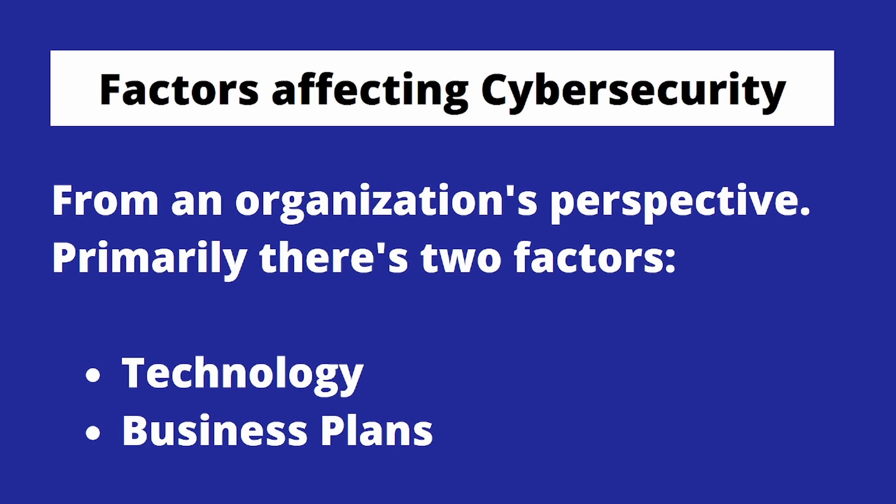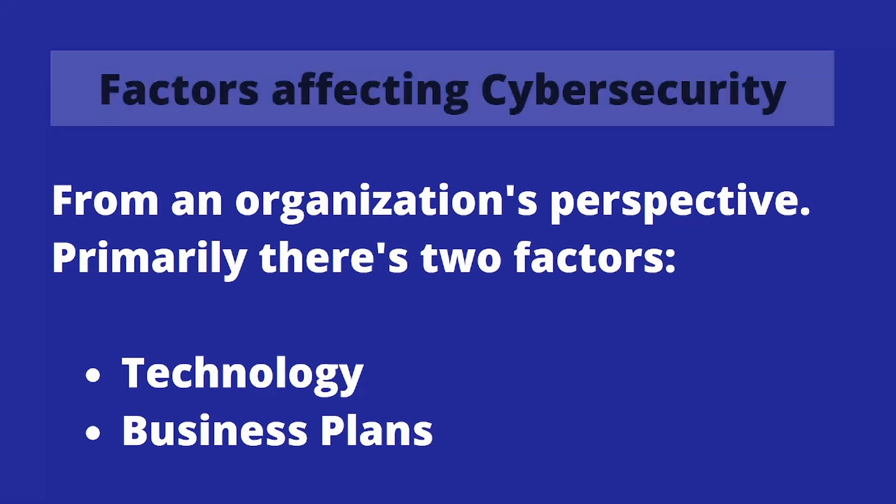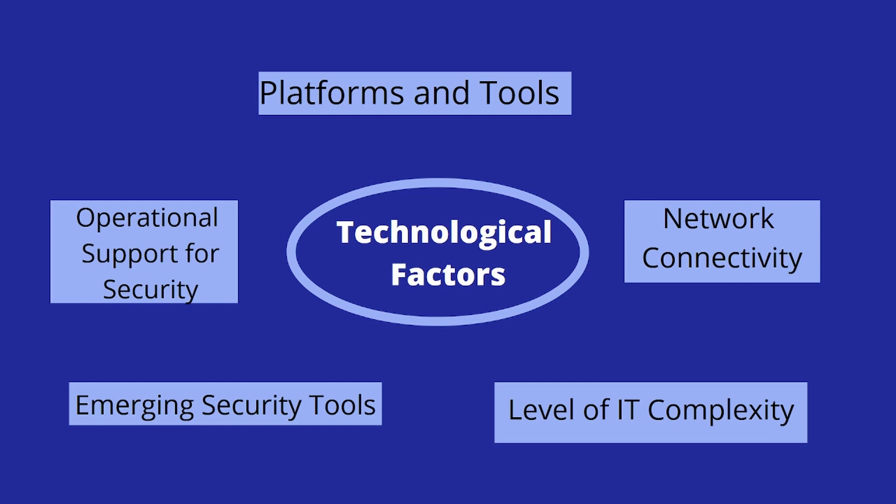Factors affecting cybersecurity. Primarily, there are two factors: the technological factors and the business plans. Starting with technological factors: the first is the platforms and tools used; the second is network connectivity issues; the third is the level of IT complexity; the fourth is the scale of technological operations; and the fifth is emerging security tools, like new updated firewalls. Additionally, there is operational support for security — it's not just that you purchase the necessary security subscriptions, but you also have to make sure there is enough support for the service you're using.